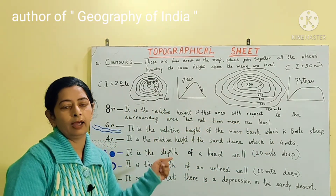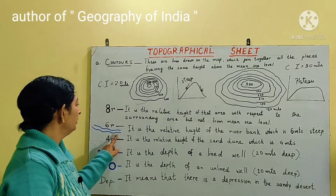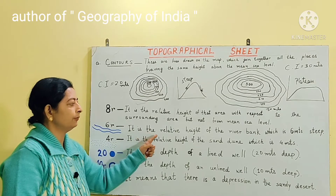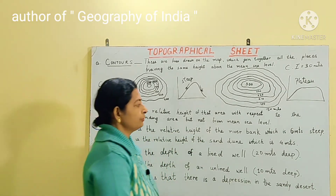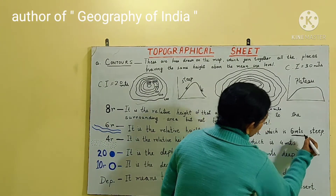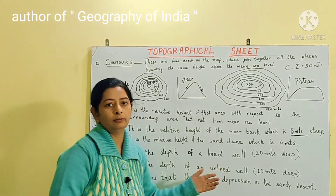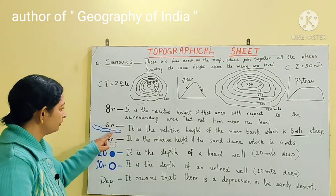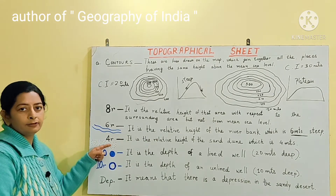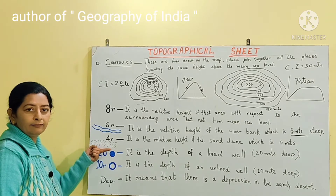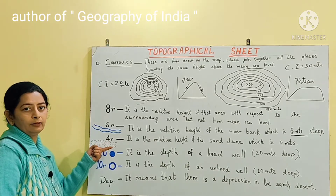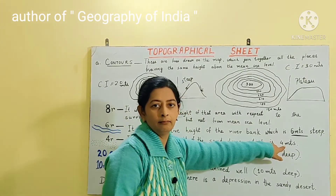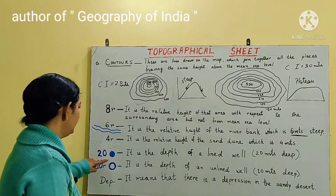Near a river, marked in blue, '6r' is written — this is the relative height of the river bank, which is 6 meters steep. Always remember to write the unit, which is meters. Similarly, '4r' written beside the conventional sign for a sand dune means the relative height of the sand dune is 4 meters. A blue spot indicates a lined well, and '20' written beside it means the lined well is 20 meters deep.